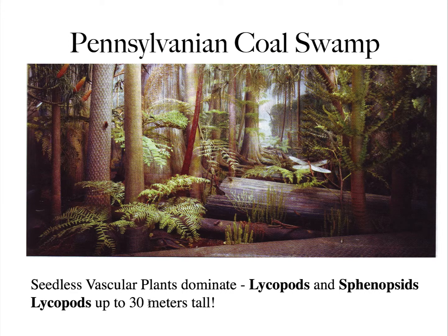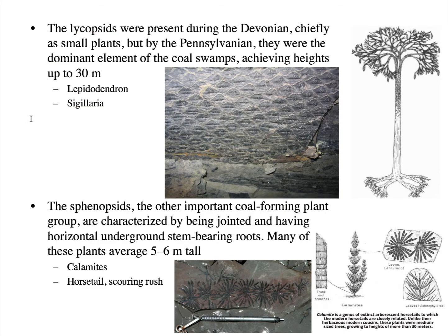Some lycopods reached 30 meters tall. The lycopods were present during the Devonian chiefly as small plants, but by the Pennsylvanian they were huge — achieving heights of 30 meters (90 feet). Lepidodendron is the key fossil here. As they grew, they had really tall trunks that branched only at the top, and as branches fell off, the bark of these lycopods left characteristic scale structures.